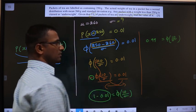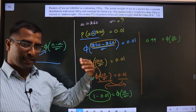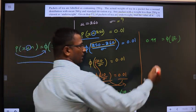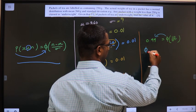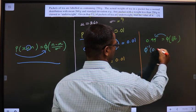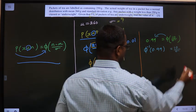Now to simplify further, I have to shift φ to this side. When the function φ gets shifted, it will become φ inverse of 0.99 equal to 10 by standard deviation.